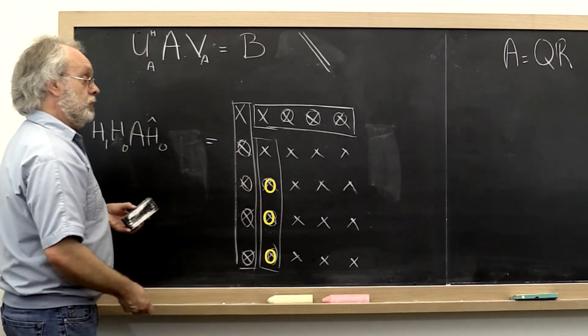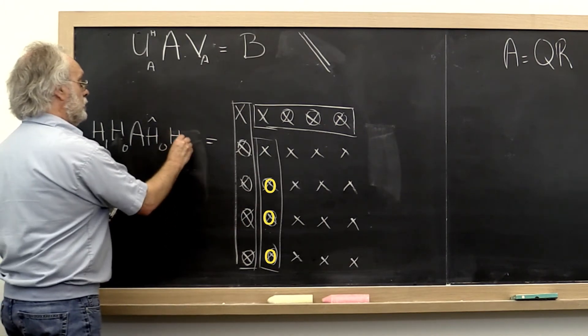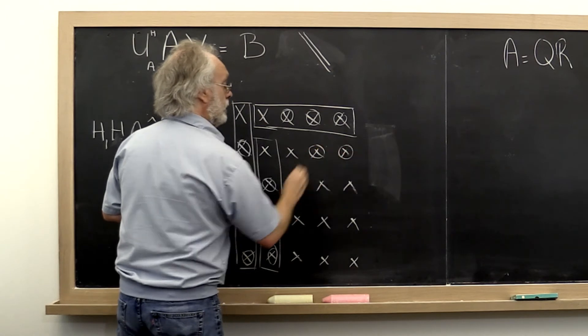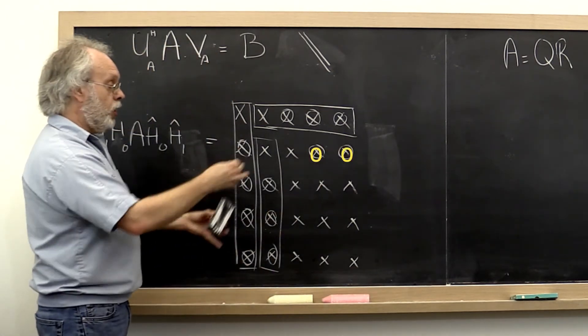And then we can look from the right and say what Householder transform introduces zeros right here. And we keep going back and forth.